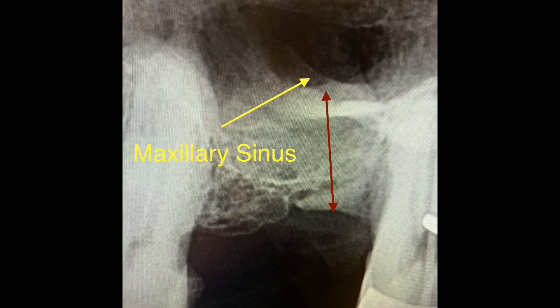This radiograph may present an exam question about the type of radiolucency pointed by the yellow arrow. You can identify it as the maxillary sinus, but keep in mind how far it extends posteriorly and anteriorly, as you may need to differentiate it from other conditions. The red arrow indicates the thickness of bone remaining after a tooth extraction, which could be a complication when a prosthetic device such as an implant is planned.